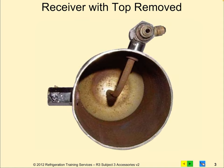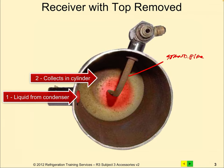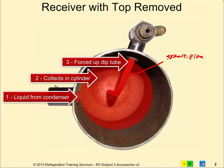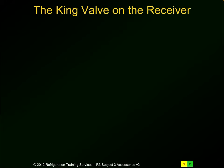Here's a cutaway of a receiver — you can see that little standpipe, also called a dip tube. Liquid comes in and falls into the cylinder, collecting there whether it's oil or liquid refrigerant. Then it gets forced up the dip tube and comes out through the King valve. This is actually the service valve that allows access to the system. It's a pretty nice little system.